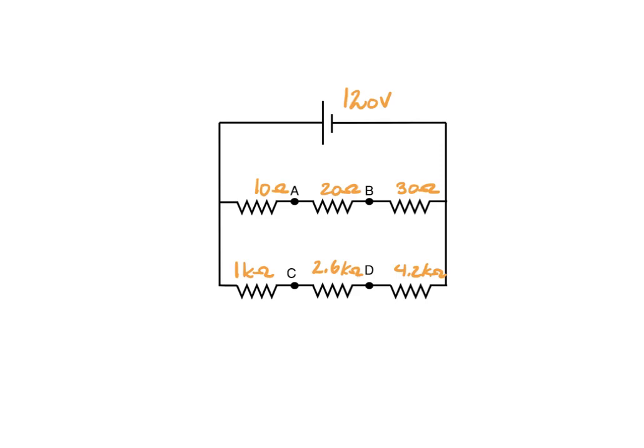So I've got 2 amps flowing through this branch. Then I can determine my voltage drop: 2 times 10 gives me 20 volts on that resistor, 2 times 20 gives me 40 volts, and 2 times 30 gives me 60 volts. So I've got my voltage drops across each one.